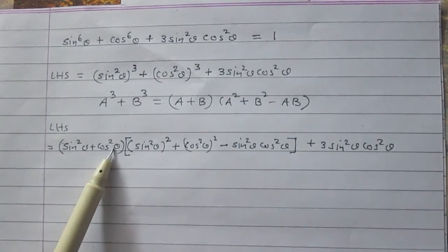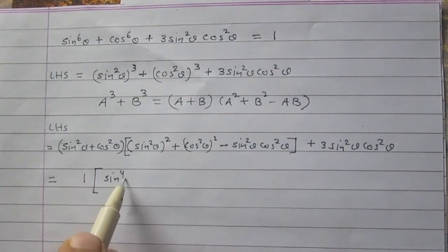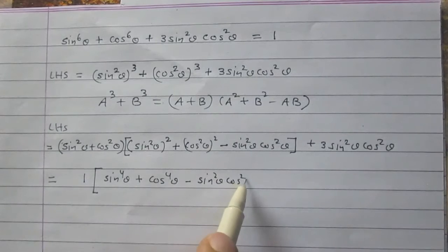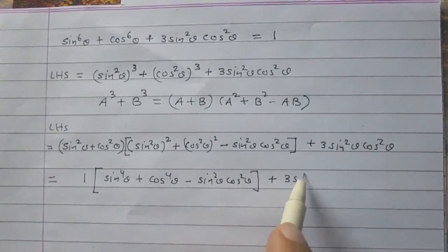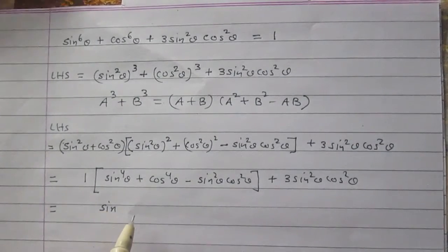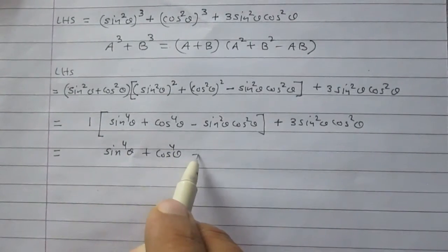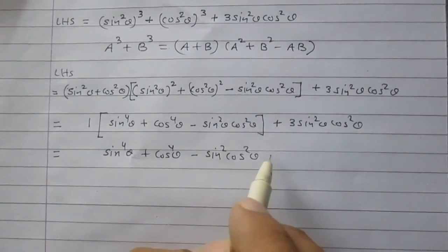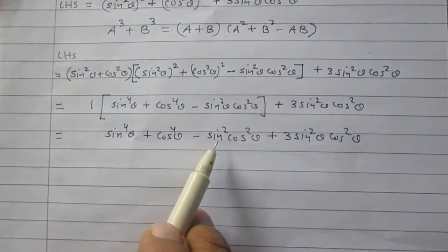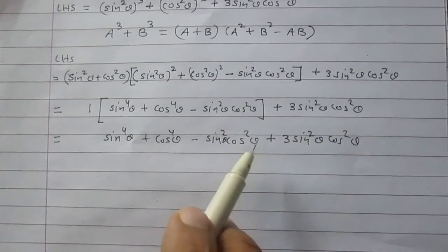Now we know that sin square theta plus cos square theta is 1, so the first term becomes 1. Then sin square theta squared is sin 4 theta, similarly cos square theta squared is cos 4 theta, then minus sin square theta cos square theta plus 3 sin square theta cos square theta. Opening the bracket, we get sin 4 theta plus cos 4 theta, and minus sin square theta cos square theta combined with 3 sin square theta cos square theta gives plus 2 sin square theta cos square theta.